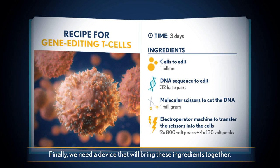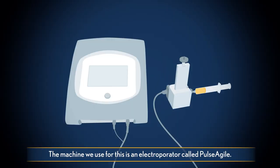Finally, we need a device that will bring these ingredients together. The machine we use for this is an electroporator, called Pulse Agile.